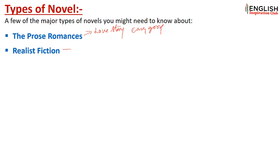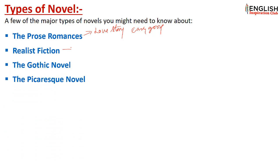Next is realist fiction. Realist fiction novels are semi-fictional novels which include some facts or factual events — such novels are called realist fiction. Another type is the Gothic novel, which is based on gloomy subject matter and horror. Horror, gloomy, and dark content written in a disappointing environment are the most important features of Gothic novels.